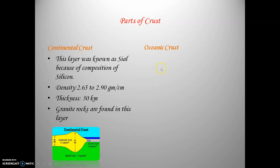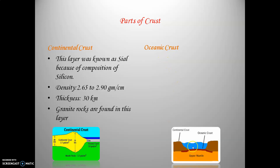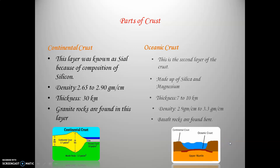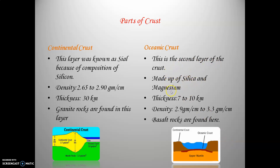Moving on to the oceanic crust — below the continental crust you have the oceanic crust. This is the second layer of the crust, made up of silica and magnesium. The continental crust is made up of silica and aluminum, whereas the oceanic crust is made up of silica and magnesium. The thickness of this layer is 7 to 10 kilometers, which is lesser compared to the continental crust. The density is 2.9 to 3.3 grams per centimeter. Mafic rocks are found in the oceanic crust.